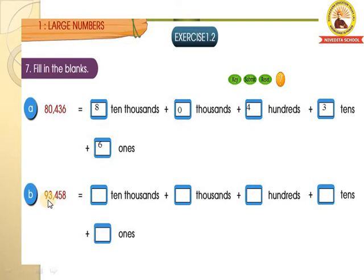Next, B: 93,458 children, this is your homework. You have to write the place values: 8 is in the 1st place, 5 is in the 10th place, 4 is in the 100th place, 3 is in the 1000th place, and 9 is in the 10,000th place. Write that down as homework.